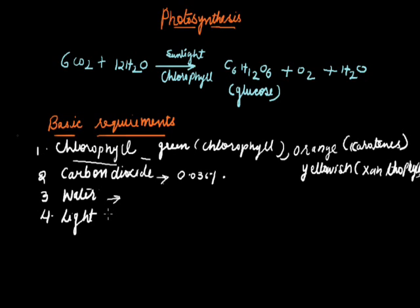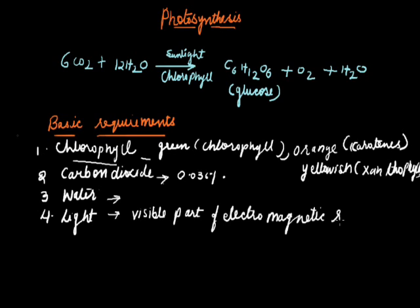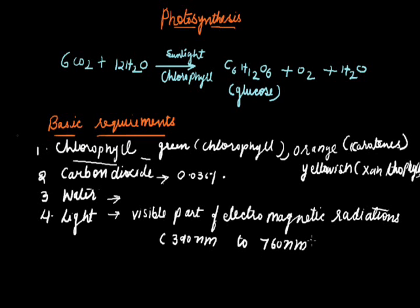The next and most important raw material for photosynthesis is light. Plants receive light from the sun, which is called solar energy. For plants, the sun is the basic source of radiant energy. The visible part of the electromagnetic radiation is responsible for photosynthesis.